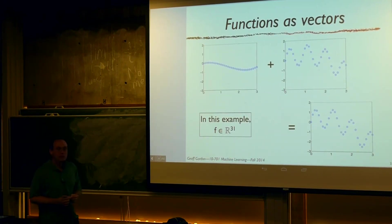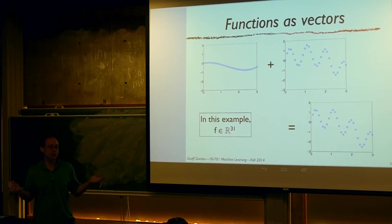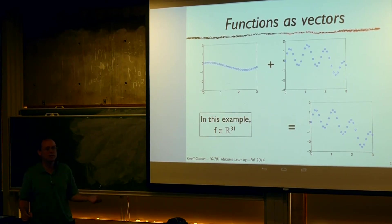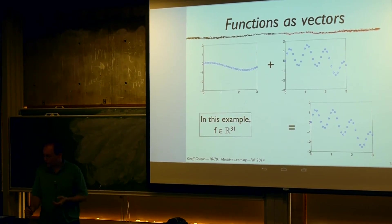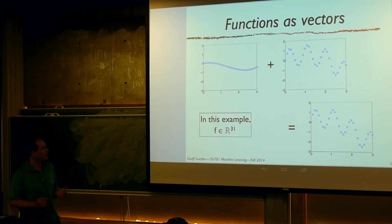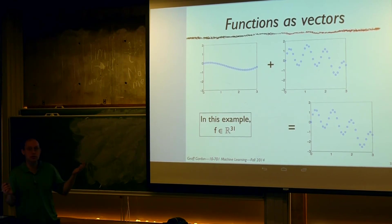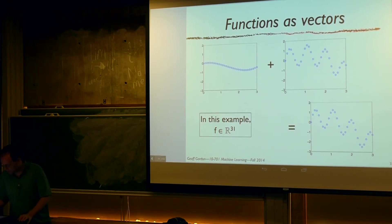What if we want to think of the whole discriminant function as a parameter? We hinted at this at the end of last lecture. One way to think about it is to sample the function at a bunch of discrete points — in this example, 31 points — so we think of the function as a 31-dimensional vector.